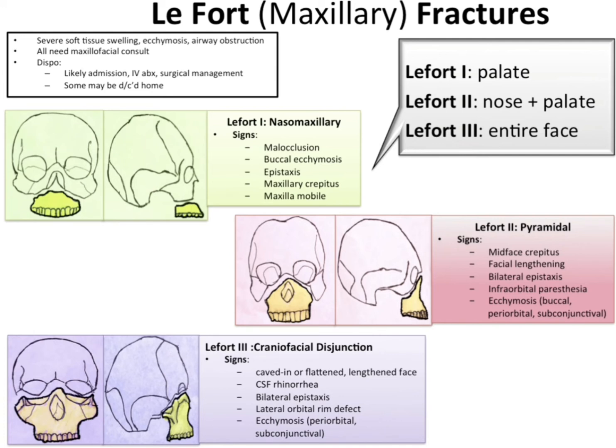General signs include severe soft tissue swelling, ecchymosis, and airway obstruction — all requiring maxillofacial consult. Le Fort 1 maxillary signs include malocclusion, buccal ecchymosis, epistaxis, maxillary crepitus, and a mobile maxilla.